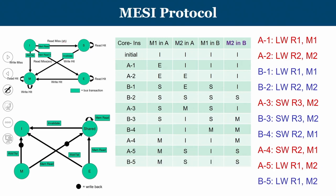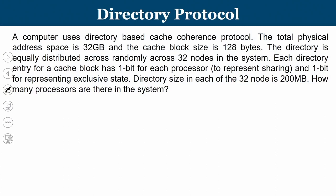In this first question, we were given a sequence of instructions and tracked the states of M1 and M2 for each instruction executed, based on the MESI state diagram. Now let us move to the second question about directory-based cache coherence. A computer uses a directory-based cache coherence protocol for a total address space of 32 GB with cache blocks of 128 bytes.